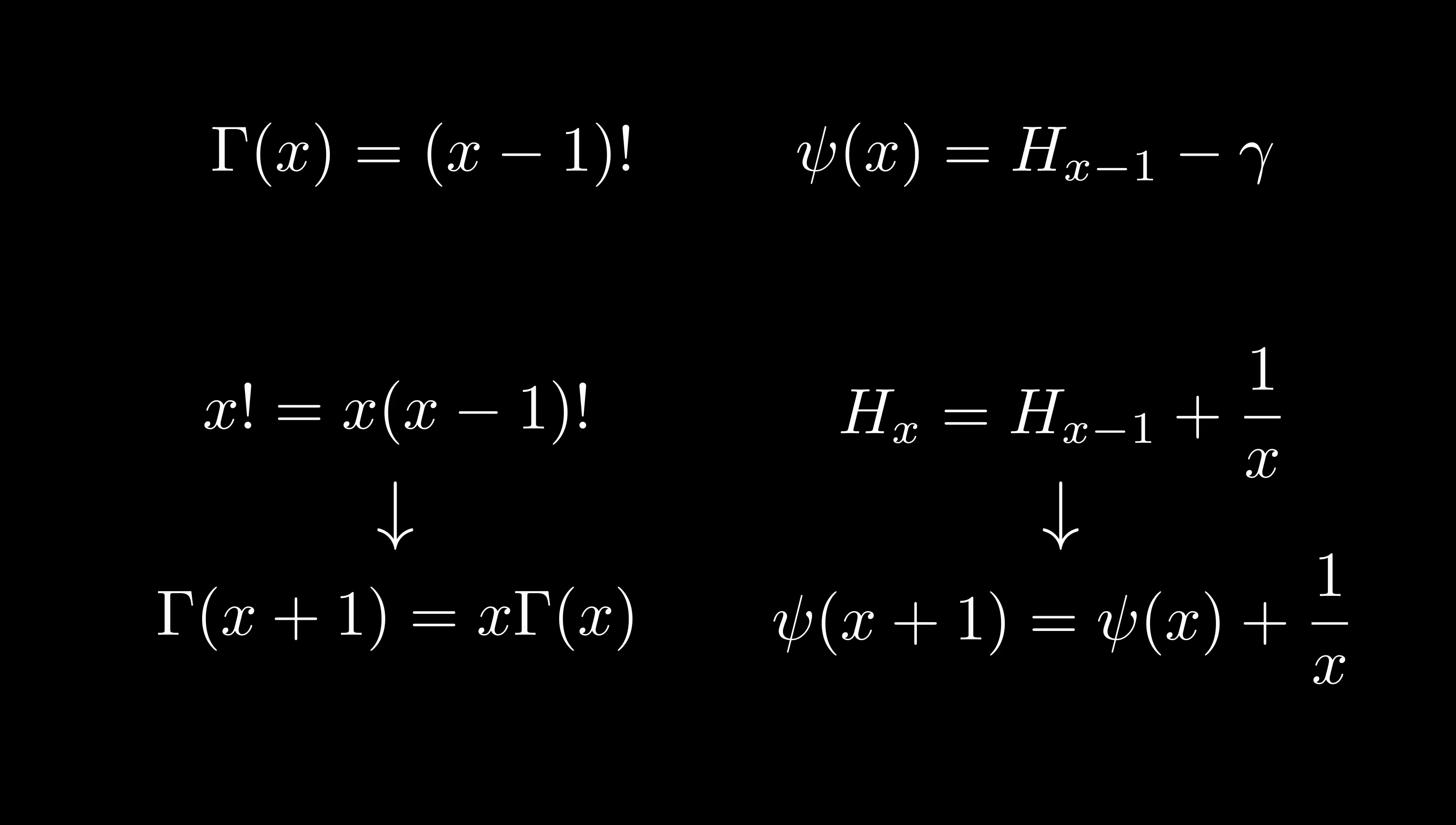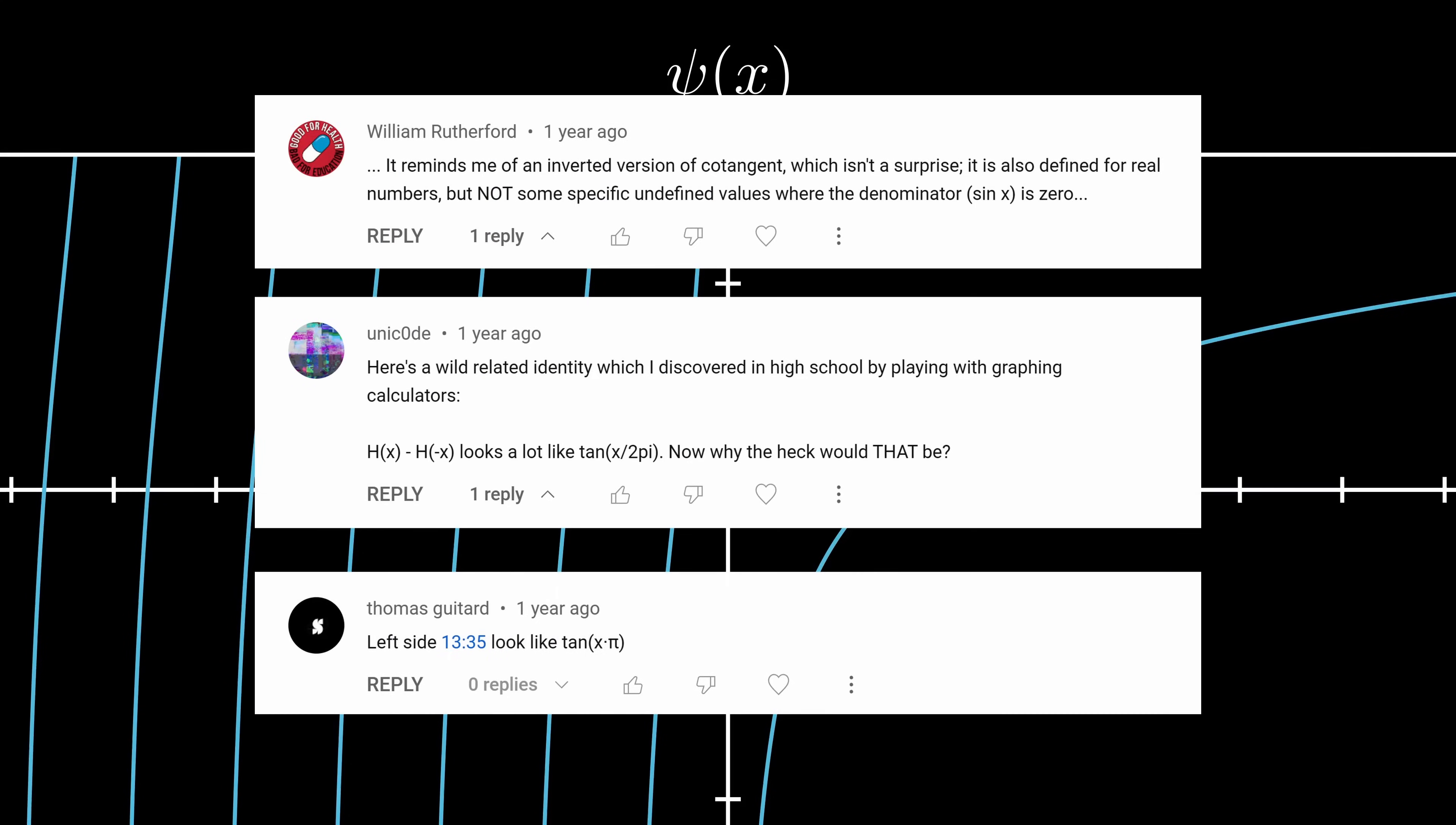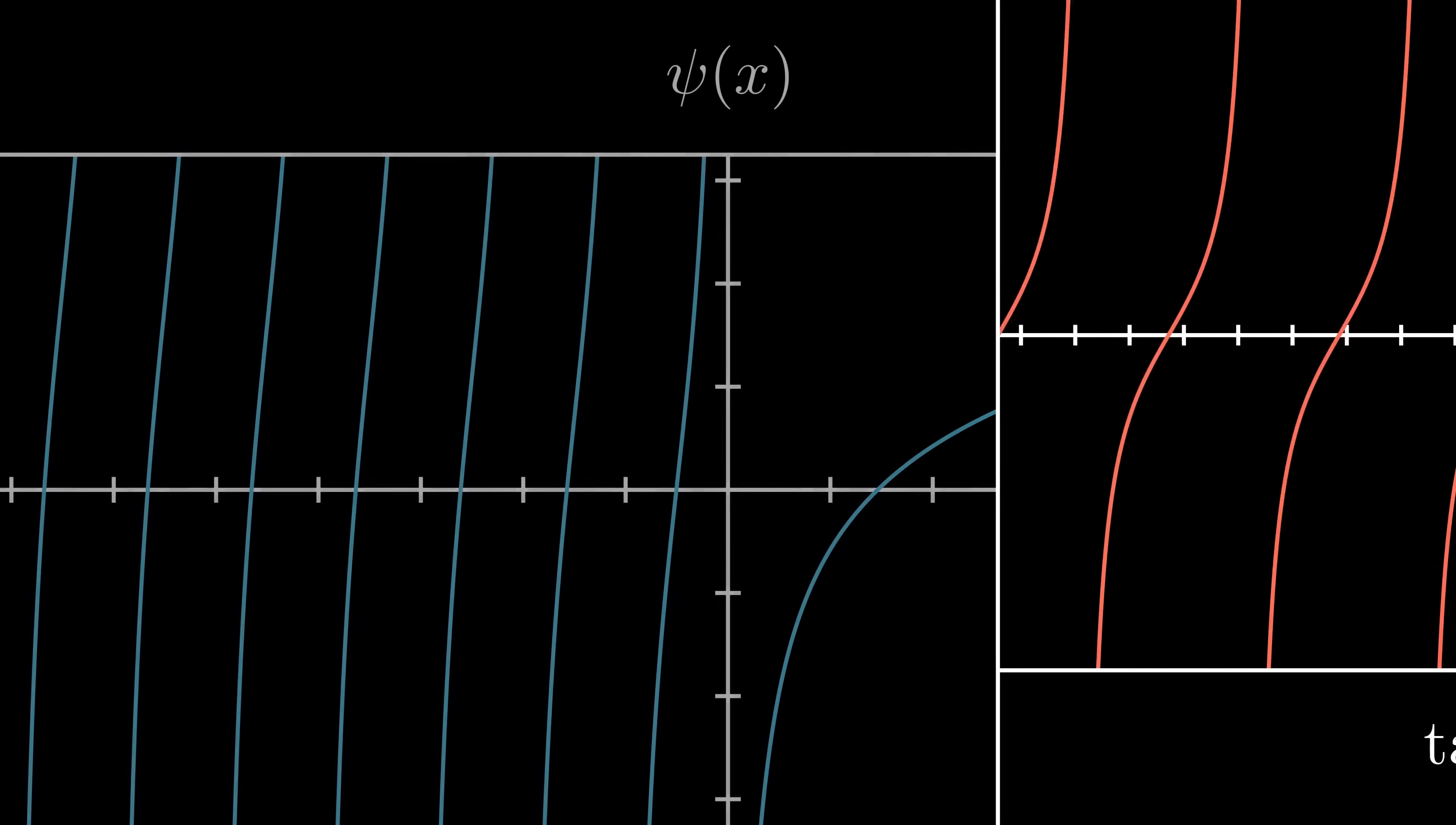Alright, it's high time we actually get to the topic of the video, so let's take a look at these connections to the trig functions I promised. We'll start with the digamma function because its connection to trig is kind of hiding in plain sight. In fact, a few people noticed it and pointed it out in the comments. The left side of the graph looks suspiciously like the graph of the tangent function, so maybe there's a connection there. To explore this, let's see if we can manipulate the digamma function to look even more like tangent.